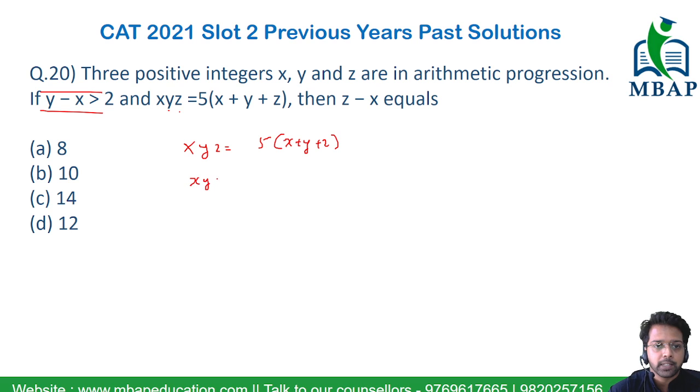So I can rewrite this as xyz equals 5 times 3y. The y will get cancelled. So xz will be equal to 15.